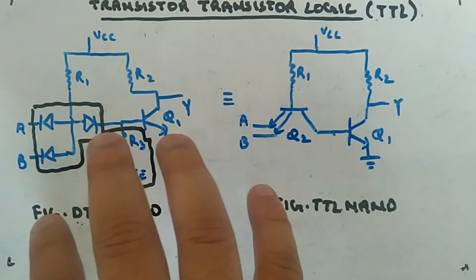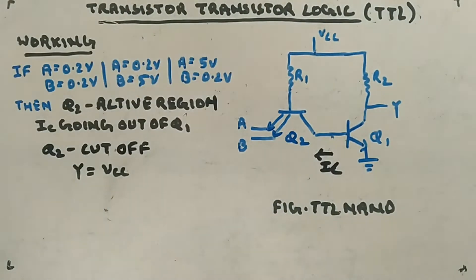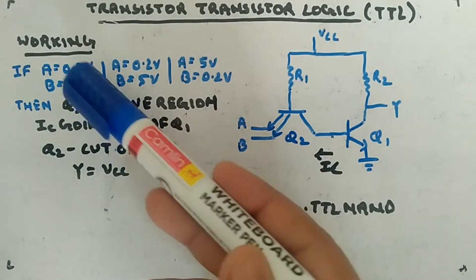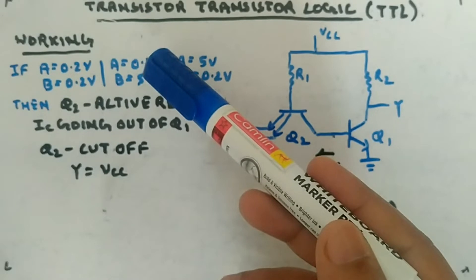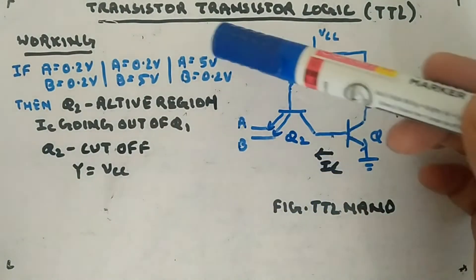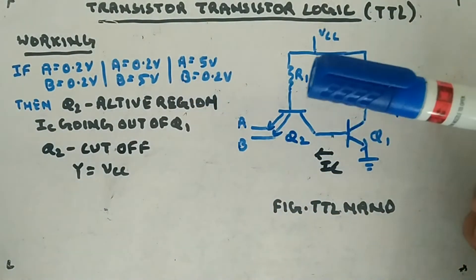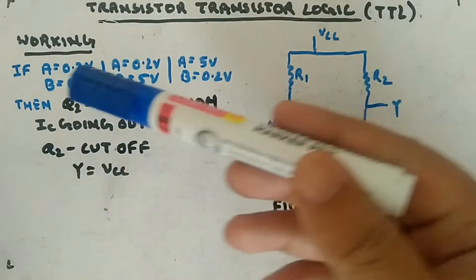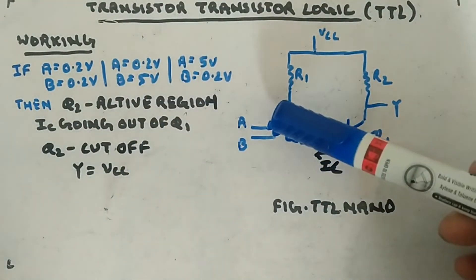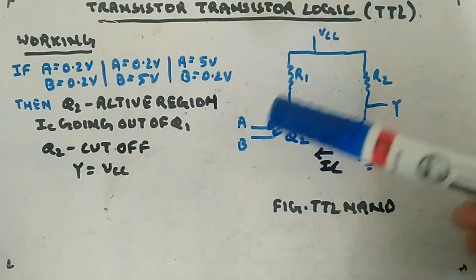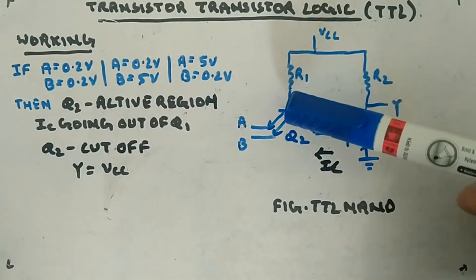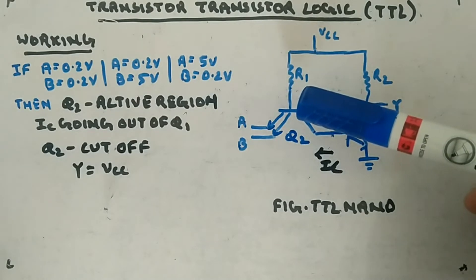Now I am explaining the working of this circuit. Let's say A = B = 0.2V (both low), or A = 0.2V and B = 5V (one low, one high), or A = 5V and B = 0.2V. In all three cases where any input is low, Q2 will be inactive. This is because a path is provided from VCC through R1 to the low input, supplying base current.